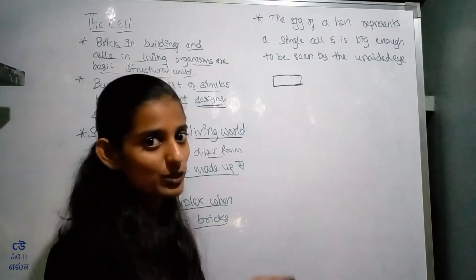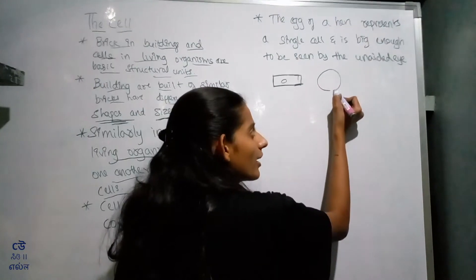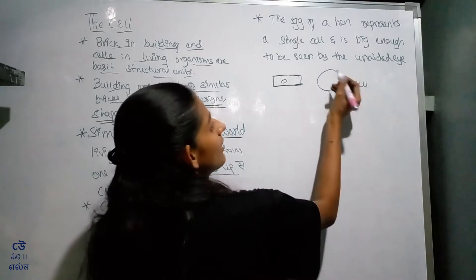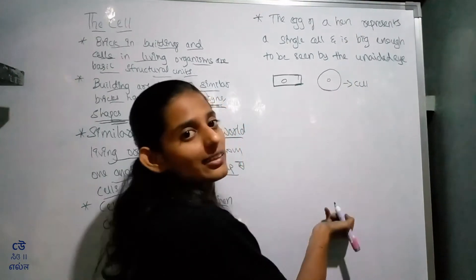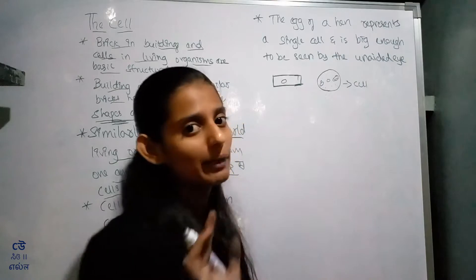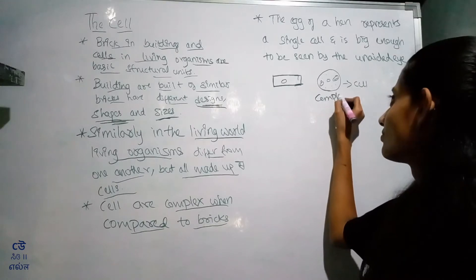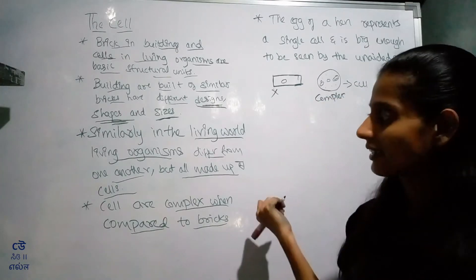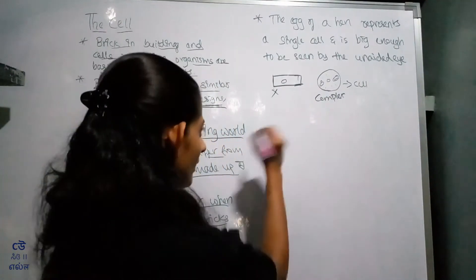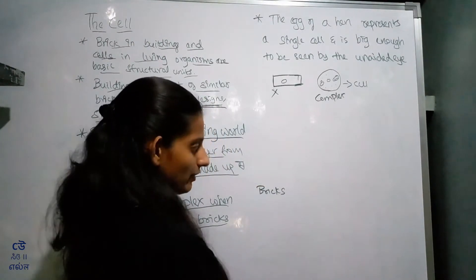Cells are complex. Inside a cell there are different compartments — for example, mitochondria and other different compartments. So the cell is complex, whereas a brick is not complex.